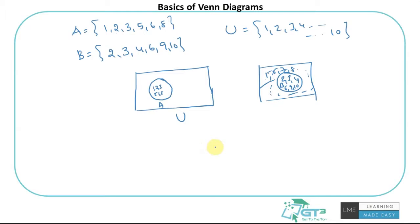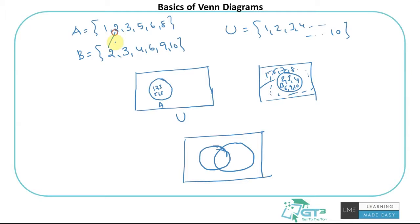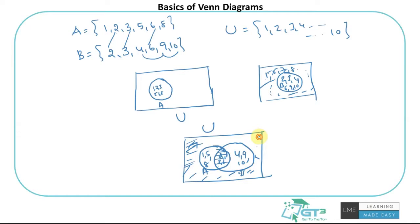Now when talking about both A and B, we see two overlapping circles because there are common numbers: 2, 3, and 6. These three common numbers are in the overlapping area. Set A's non-overlapping part has 1, 5, and 8. For Set B, 2, 3, 6 are in the overlap, and 4, 9, and 10 are in B's non-overlapping part. The remaining number 7 is not part of Set A or Set B, so it sits outside both circles.